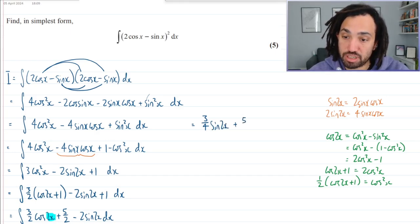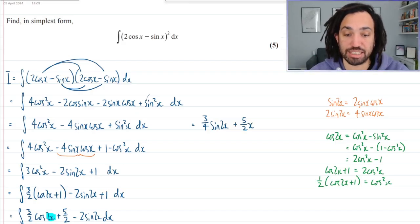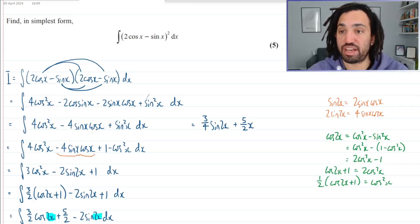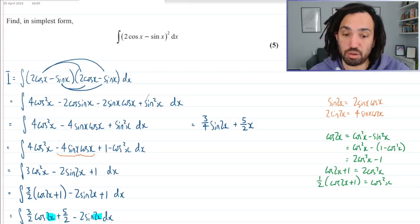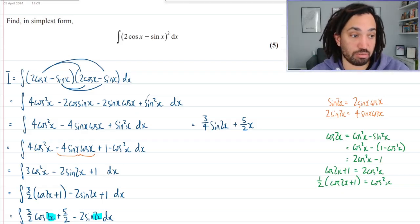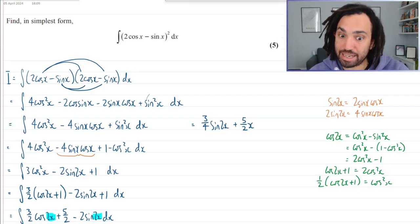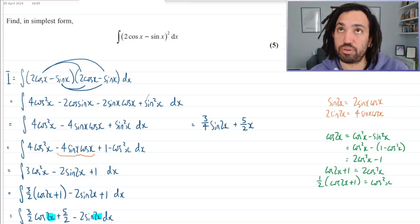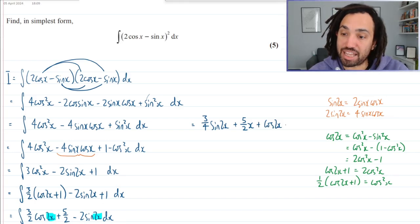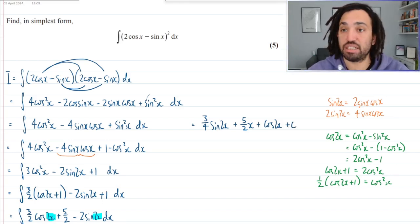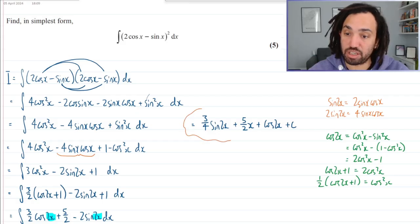5 over 2 integrates to 5 over 2 x. And again, we look at the input, which is 2x. The derivative of that is 2. So I divide by 2, which just cancels out with the times by 2 here. And then I need to think about minus sin integrates to positive cos. So it's positive cos 2x. And then we plus c. Don't forget that. Fantastic. This is our final answer.